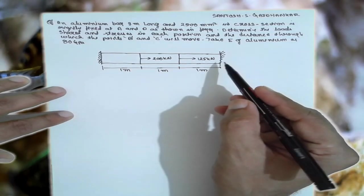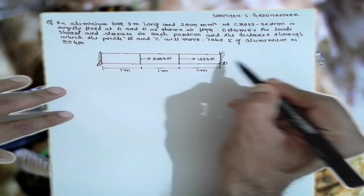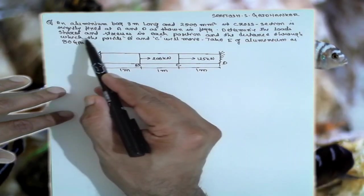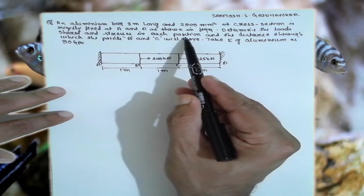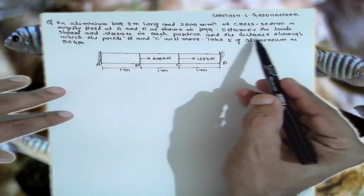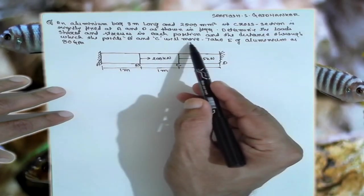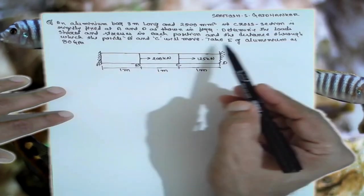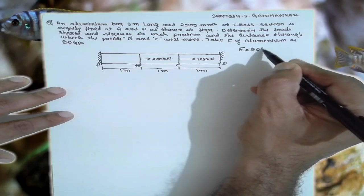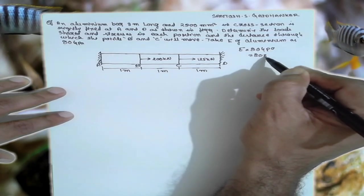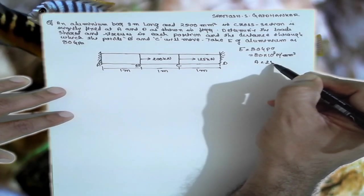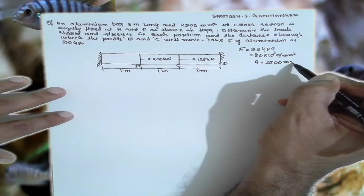This is A and D which is fixed here. This is B and C here. Determine the load and stress in each portion. You have to determine the load and the stresses in each portion, and distance through which B and C will move. Take E is equal to 80×10³ N/mm². Area is given as A = 2500 mm².